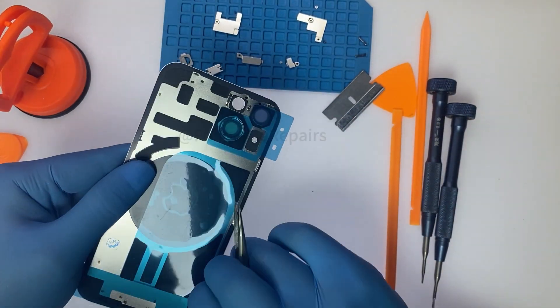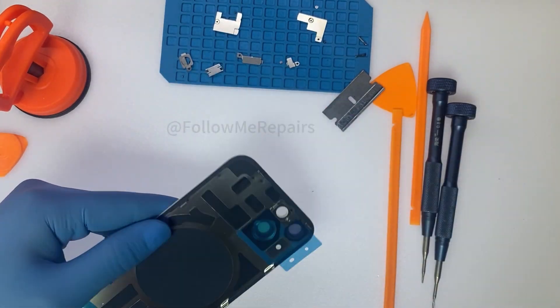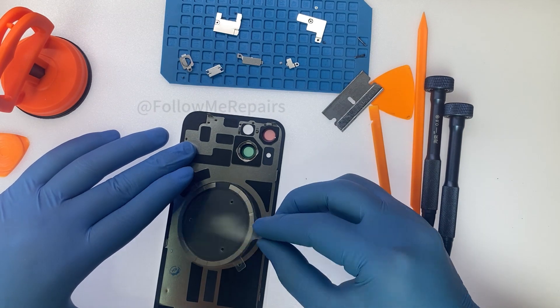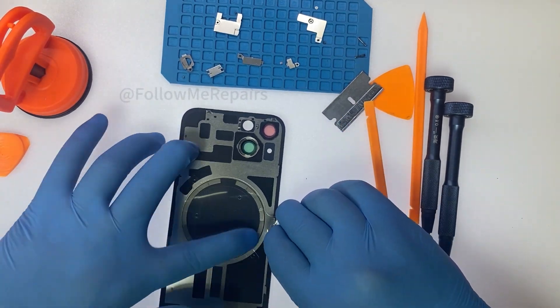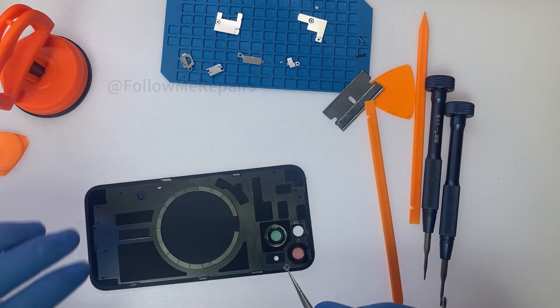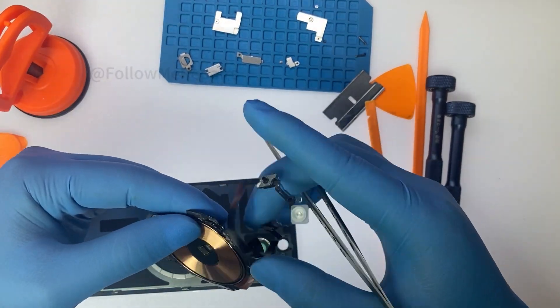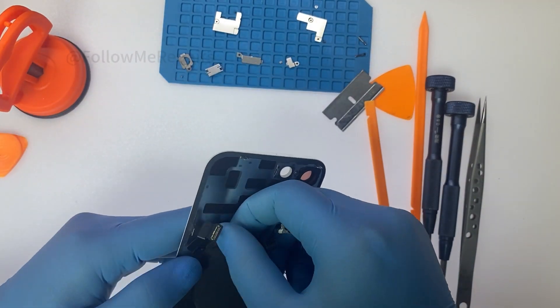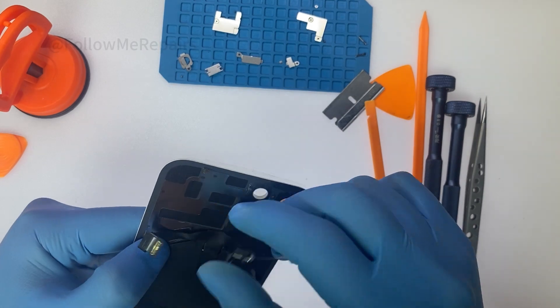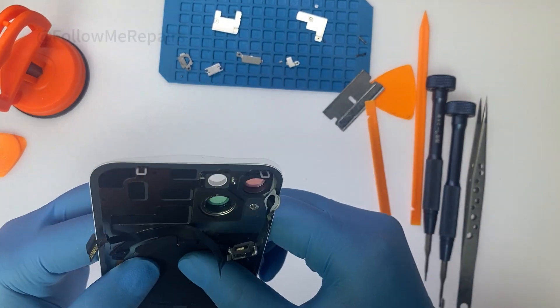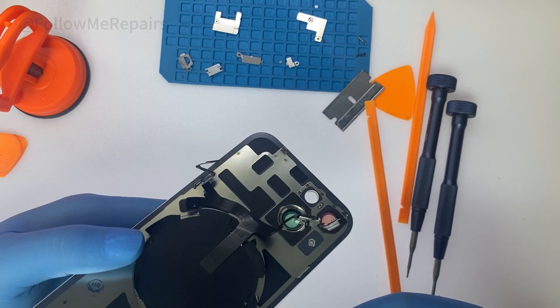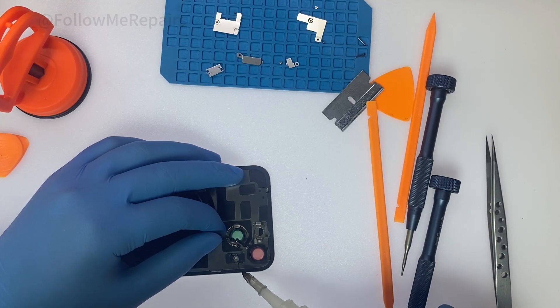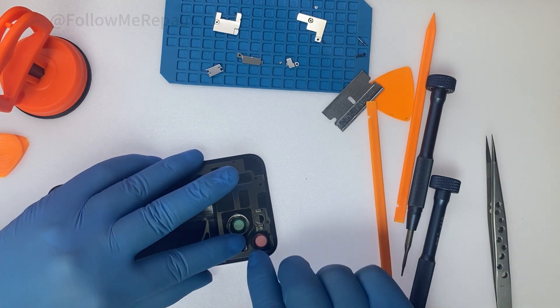First install the magnetic ring on the iPhone back cover. Then install the wireless charging module onto the new iPhone back cover. Continue to install the wireless charging module screws and metal plates.